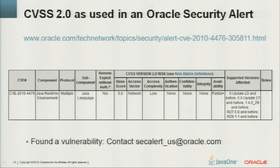How was the double bug scored? CVE-2010-4476 was in the Java Runtime Environment, reachable via multiple protocols — HTTP being the most severe. The sub-component was in the language packages. Remote exploit without authentication? Yes. The base score was 5: network access, low complexity, no authentication required. There was no confidentiality or integrity impact, but a partial availability impact. Java 6 update 23 and 5 update 27 fixed the issue.